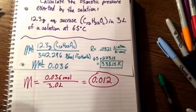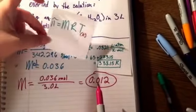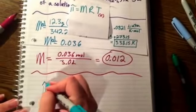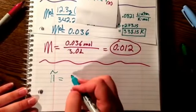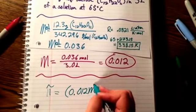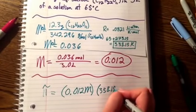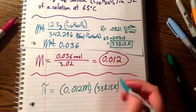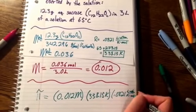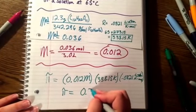So at this point, we already calculated our kelvin and our molarity. So now we just go back to our formula for osmotic pressure. And we will see that our osmotic pressure equals our molarity, which is 0.012, times our kelvin, 338.15 kelvin, times our R constant, which is 0.0821 liter atmosphere per kelvin mole. Multiplying all that together gives you an osmotic pressure of 0.333.